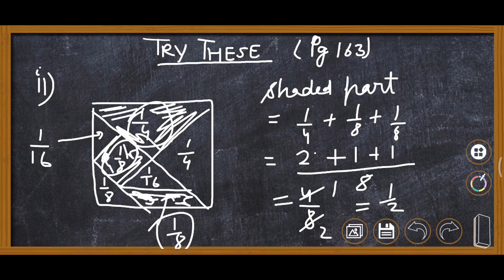Now you can see 1 upon 2 parts are shaded here. If we are finding out the percentage of this 1 upon 2,